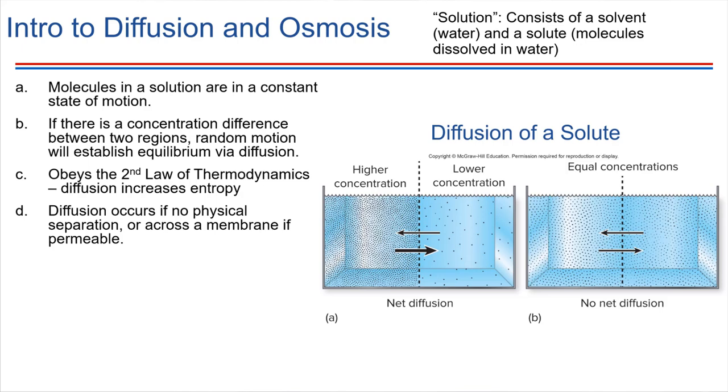Cells depend a lot on diffusion and osmosis, so we're going to review what these words are talking about. Remember that molecules are always moving as long as they're at a temperature above zero Kelvin, which they are in living systems. Molecules are always moving, and because of that movement, they tend to spread out from areas where they're more highly concentrated to where they're less highly concentrated.